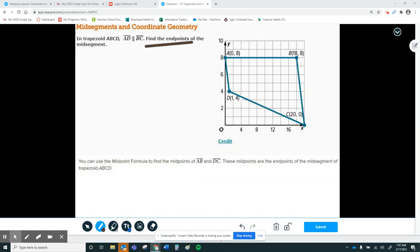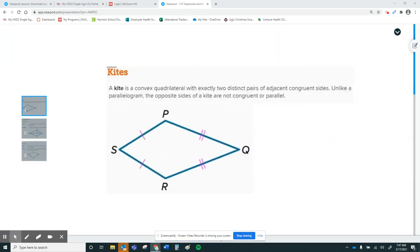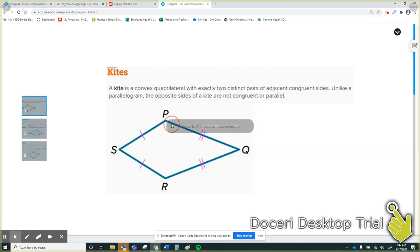Alright, finally, let me work a problem using a kite. Again, the diagonals are perpendicular. The two consecutive sides are congruent. And the angles connecting your two unique sides, your two non-congruent sides, so angle P and R in this particular picture, are going to be congruent as well.